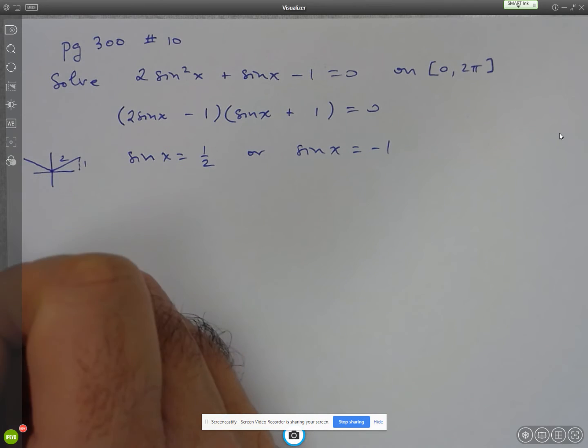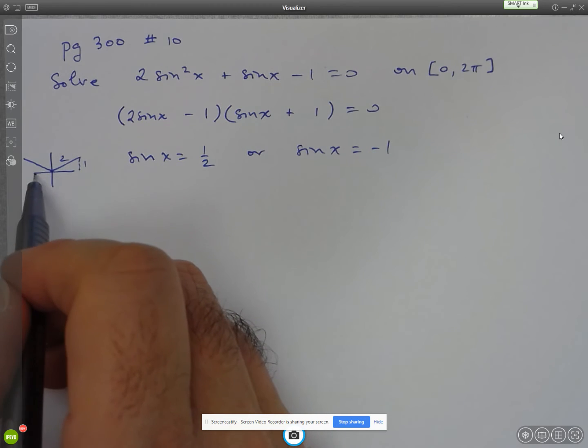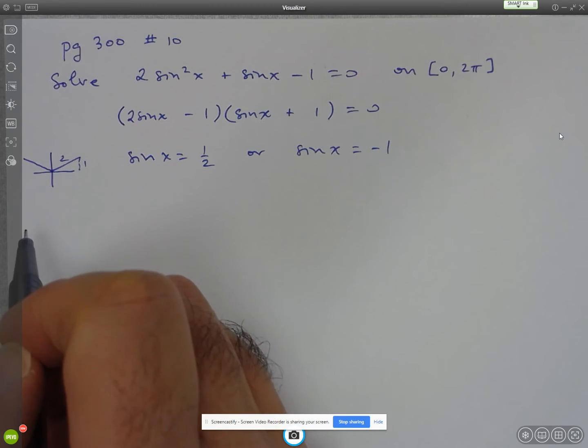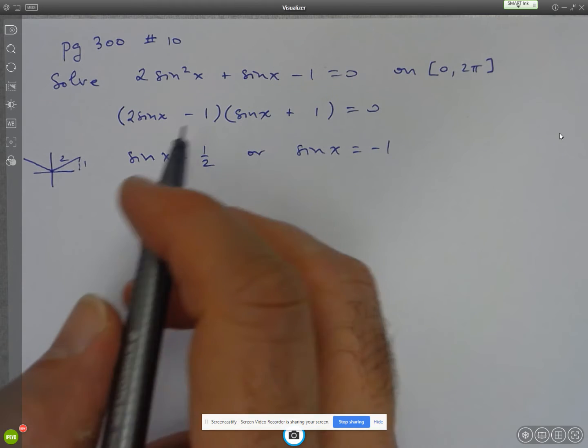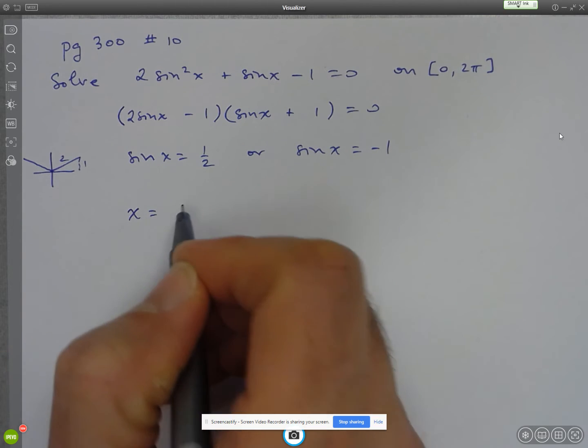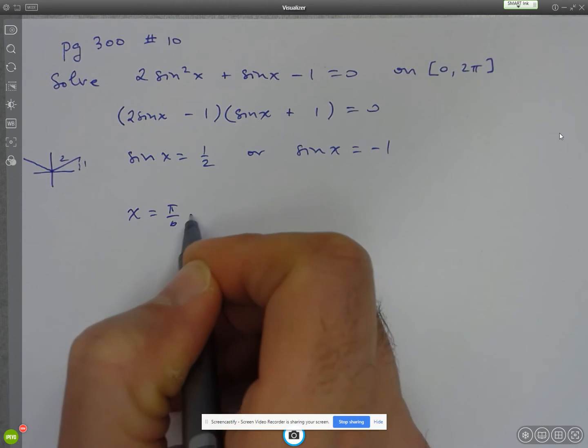to figure out that the other answer is going to be in the second quadrant, 5 pi over 6. Now, even if I had done pi minus pi over 6, I would have gotten to the same answer. So from this first one, we have x equals pi over 6 and 5 pi over 6.